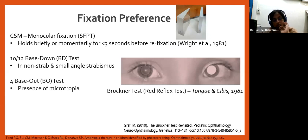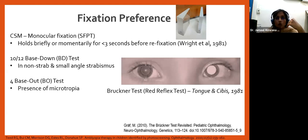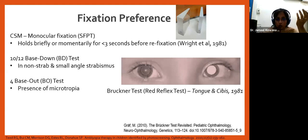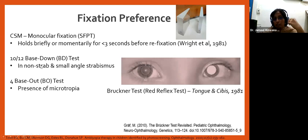If the child holds fixation only briefly — less than three seconds — before refixating to the dominant eye, this indicates fixation preference. Dr. Wright's criteria classify this behavior. For strabismic amblyopes with esotropia or exotropia, CSM testing is used. For anisometropic amblyopes who are apparently orthophoric, or those with microtropia (small-angle strabismus less than eight prism diopters), Dr. Wright recommends the Induced Tropia Test using a 10 or 12 prism diopter base-down prism.